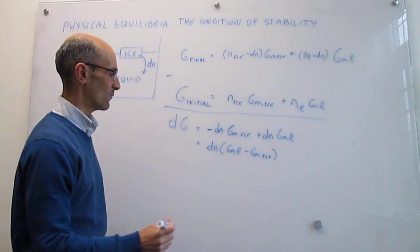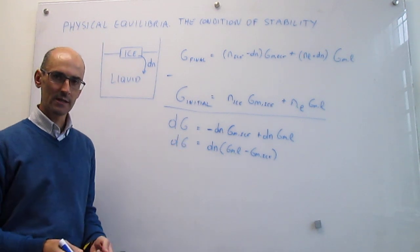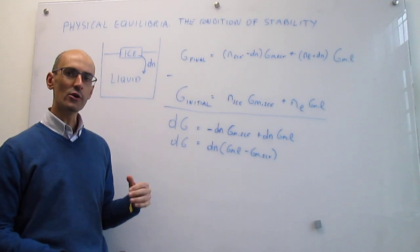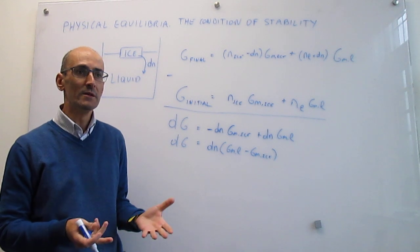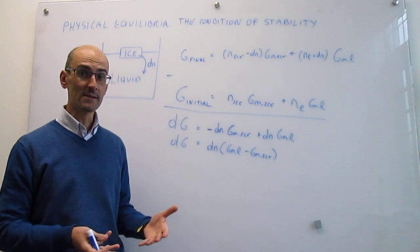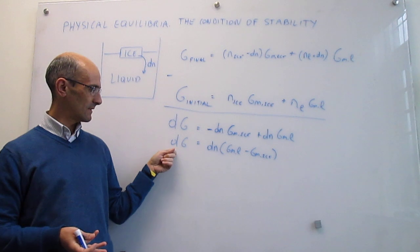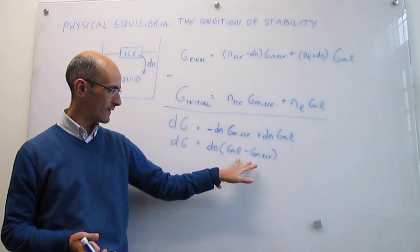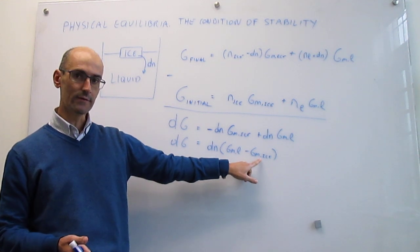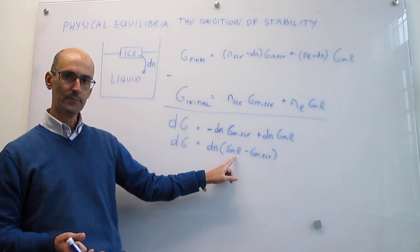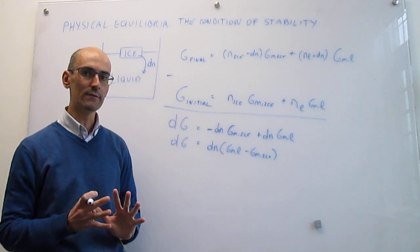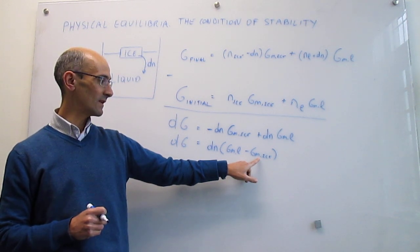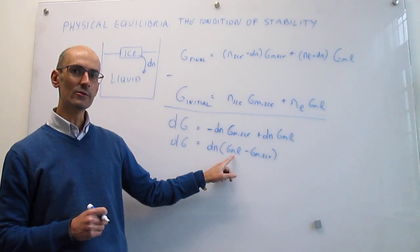So we come to the really important part of this video. We're trying to predict whether this transformation is spontaneous or not — we want to know what the sign of this differential of G is. This differential of n is always going to be positive, so if this process is spontaneous, which means dG has to be negative at constant pressure and temperature, then we need the parentheses to be negative. In order for that to happen, the molar Gibbs energy of the ice, which is your starting phase, has to be larger than the molar Gibbs energy of the liquid. So that is the condition for stability: the molar Gibbs energy of the phase you're starting from has to be larger than the molar Gibbs energy of the phase you're ending in.